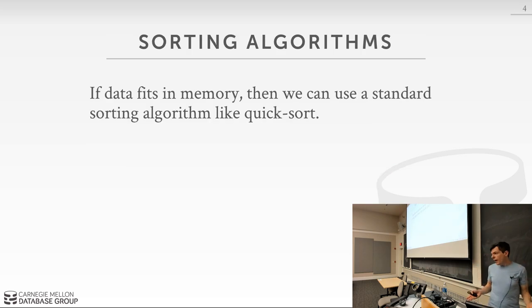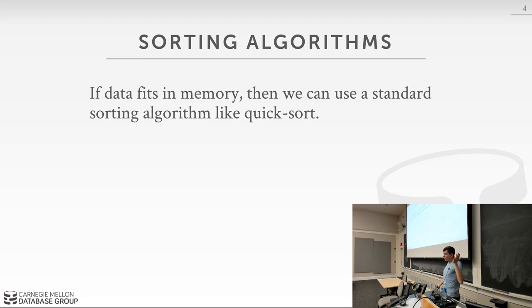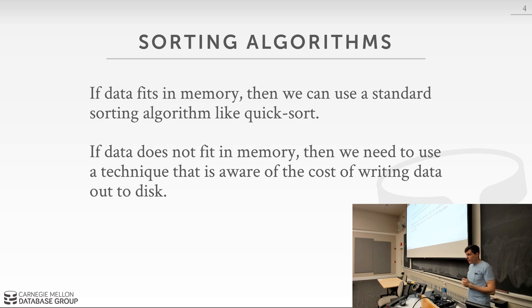Why am I even bothering talking about sorting? Because everyone here has taken intro CS — if everything fits in memory, we can just use quicksort, heap sort, merge sort, whatever your favorite sort is, and we're done. There's nothing magic in a database system that makes one in-memory sorting algorithm better than another. The thing we're going to focus on is when the data doesn't fit in memory — when you have to spill to disk. That's what they don't teach you in intro CS.